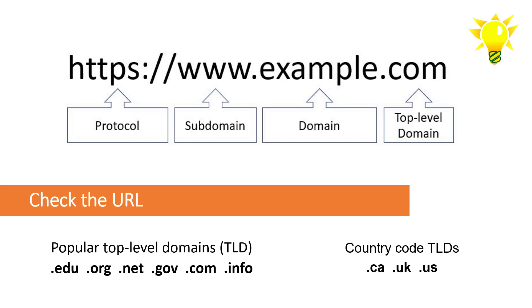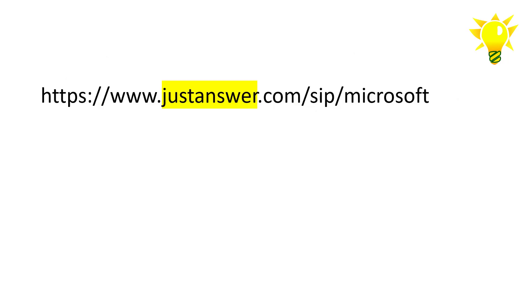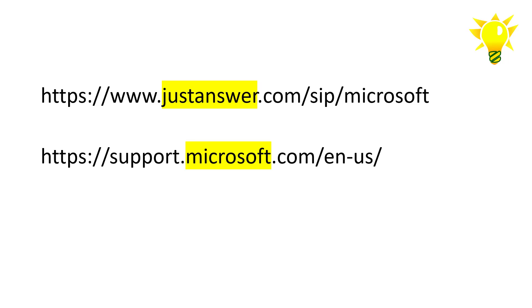Also, pay attention to the country code top-level domain, such as .ca or .uk, and consider the national origin of the information in your evaluation. Notice how the domain of this URL should tell you that this is not a service provided by Microsoft, since Microsoft does not appear in the domain name, as it does here.